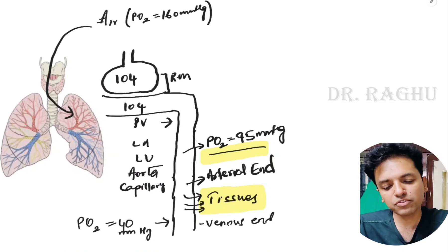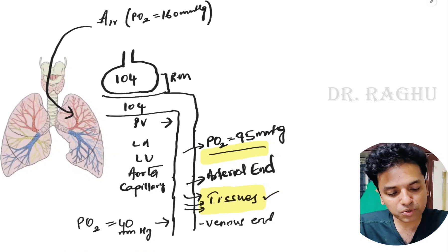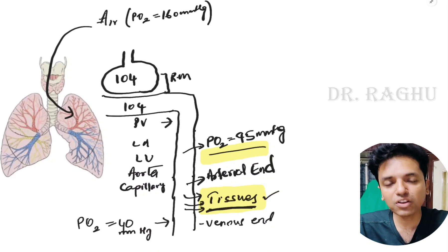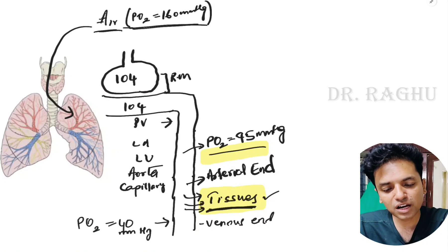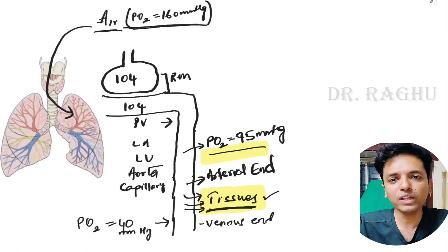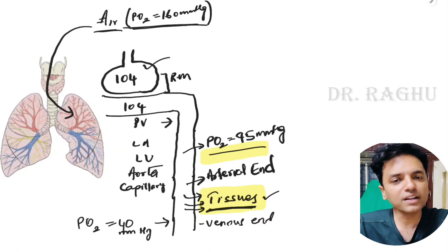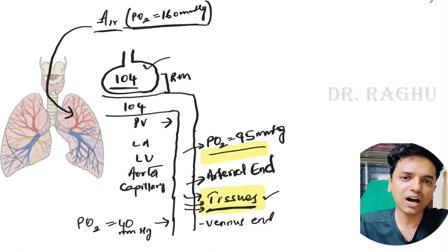To understand the classification and causes of hypoxia, we need to know the simple transportation of oxygen. The oxygen comes from the atmosphere, where its partial pressure is 160 mmHg. This air is inhaled — requiring properly functioning lungs and thoracic cage — and enters the alveoli, where the partial pressure of oxygen falls to 104 mmHg due to humidification.